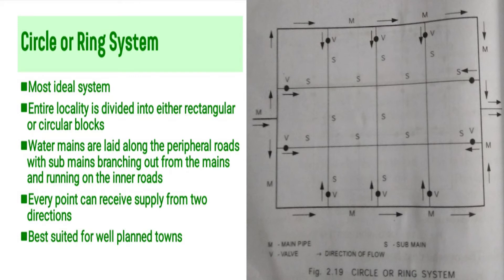The third layout is the circle or ring system. It is the most ideal system. The entire locality is divided into rectangular or circular blocks. Main pipes run along peripheral or boundary roads. Sub-main pipes run along inner roads. Every point can receive water supply from two directions. This system is used in well-planned towns.